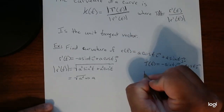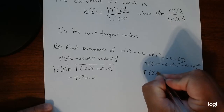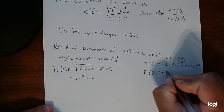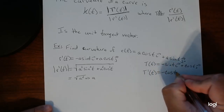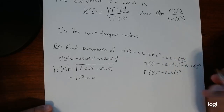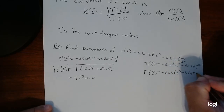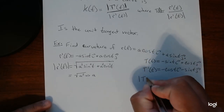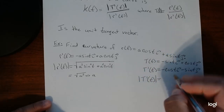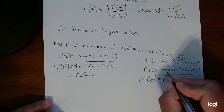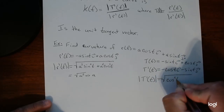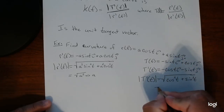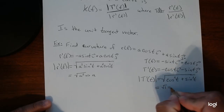According to our equation, I've got to take the derivative of that unit tangent vector. The derivative of negative sine is negative cosine t, and the derivative of cosine is negative sine. Now I've got to find the length of this. Squaring both components makes them positive no matter what, and cosine squared plus sine squared equals one, so the length is one.